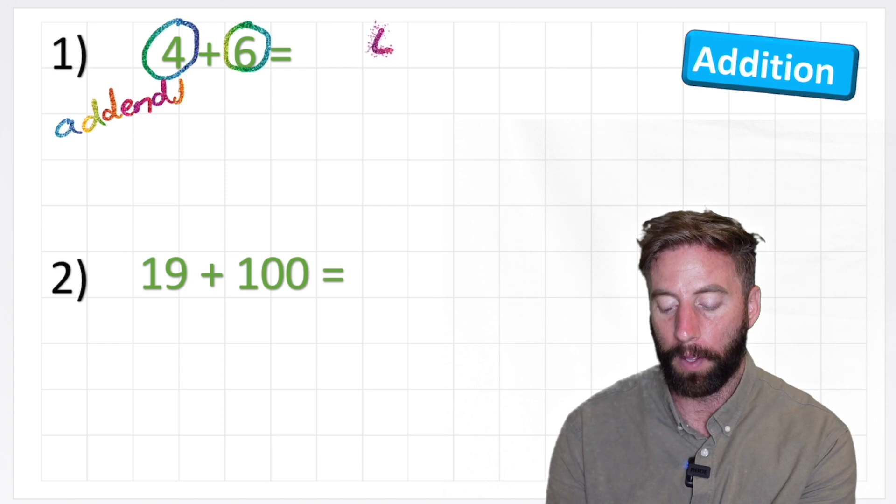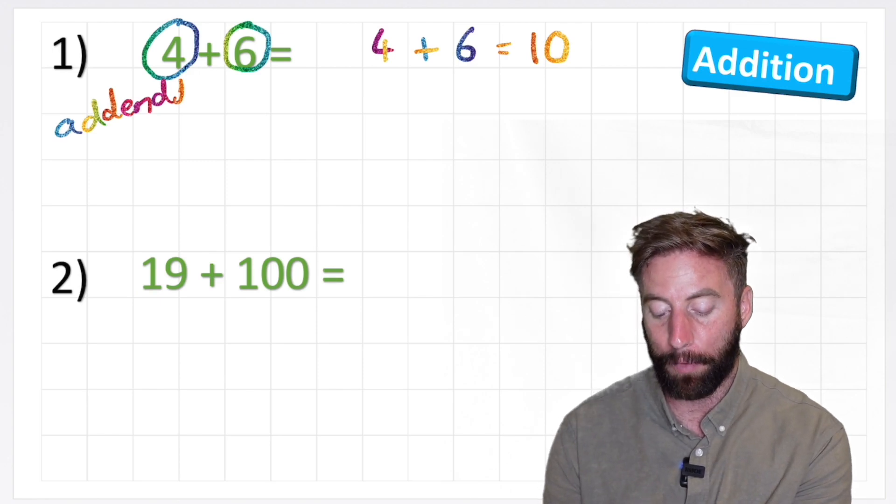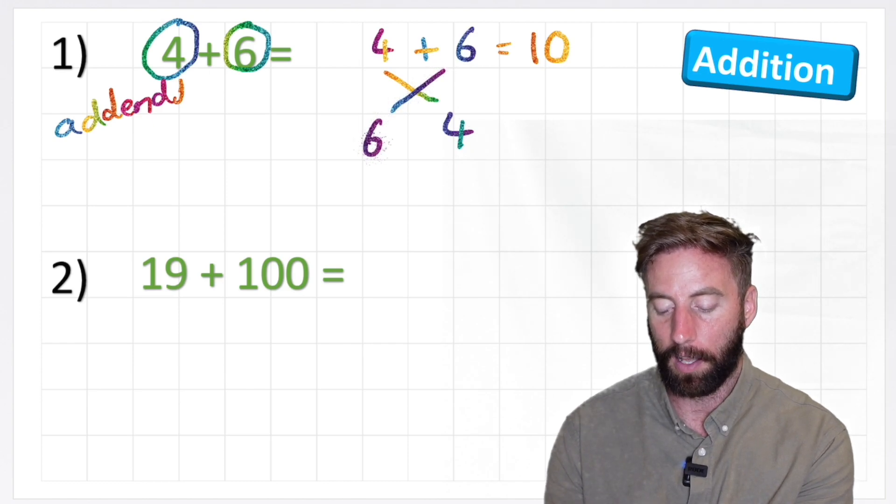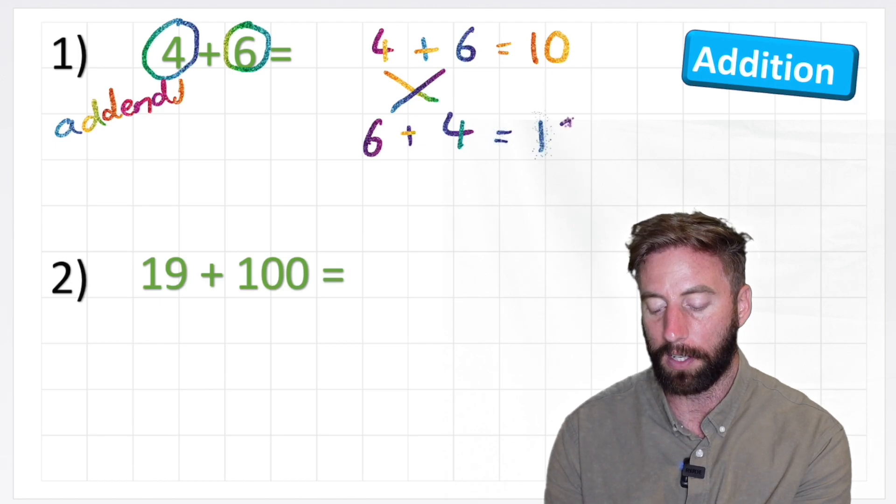Watch, if I put 4 + 6, I'm going to get the answer 10. However, if I flip my addends the other way around, and put my 4 on the other side and my 6 at the start, 4 + 6 also equals 10.